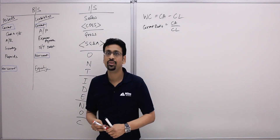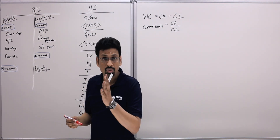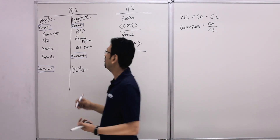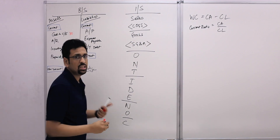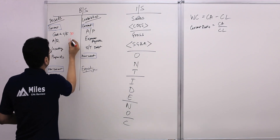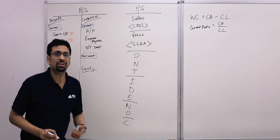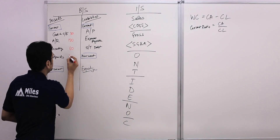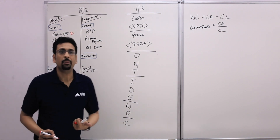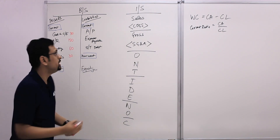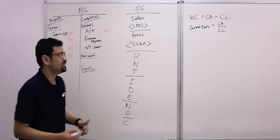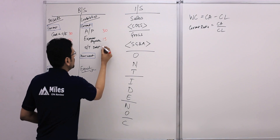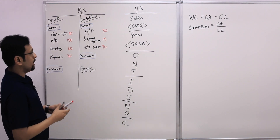Let's put some numbers here. Cash and cash equivalents: $30,000. Accounts receivable: $150,000. Inventory: $60,000. Prepaid: $30,000. Accounts payable: $30,000. Expense payable: $15,000. Short-term debt: $90,000.